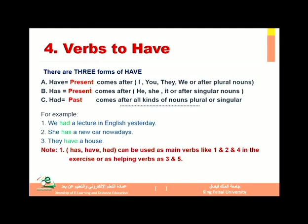For example, I have a pen. لحظوا بأن الضمير 'I' يستخدم معها 'have'. You have a pen. They have a pen. We have a pen. The students have a pen. The boys have a pen. The girls have a pen. So we use 'have' after I, you, they, we, or after any other plural noun.